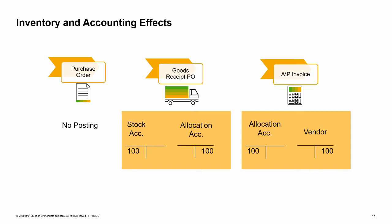Later, when the AP invoice is posted, the goods receipt PO is closed. At that point, the AP invoice creates a journal entry that posts the invoiced amount to the debit side of the allocation cost account and to the credit side of the vendor account. In this way, the amount in the allocation cost account from the goods receipt PO is cleared and the system records the amount owed to the vendor.